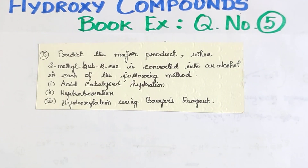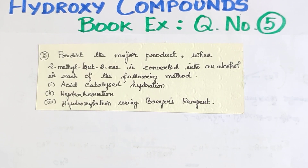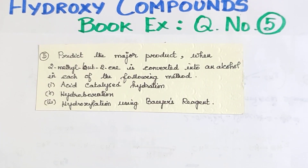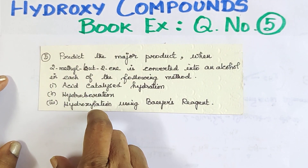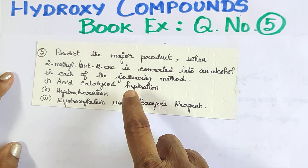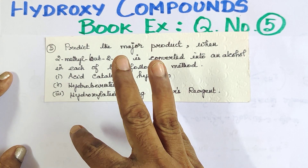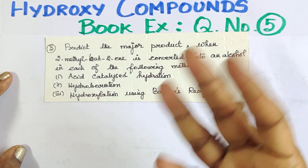The question asks: predict the major product when 2-methyl-but-2-ene is converted into an alcohol by each of the following methods: acid catalyzed hydration, hydroboration-oxidation, and hydroxylation using Baeyer's reagent. We will find the major product from each of these three methods.